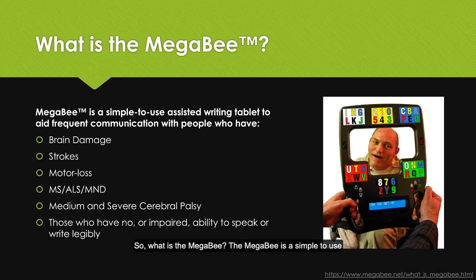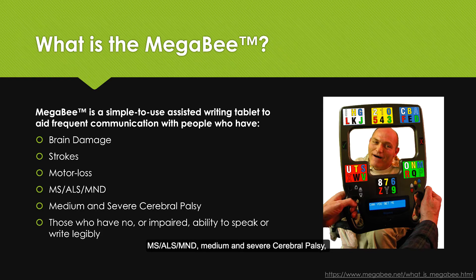So what is the Megabee? The Megabee is a simple to use assisted writing tablet to aid with frequent communication for people who may have brain damage, strokes, motor loss, MS, ALS, or MND, medium and severe cerebral palsy, and those who have no or impaired ability to speak and cannot write legibly.